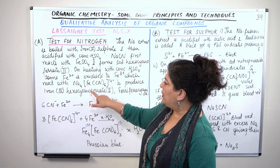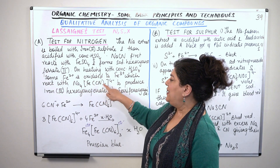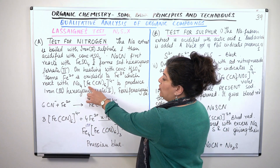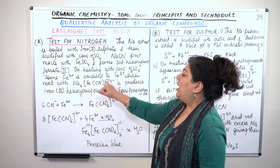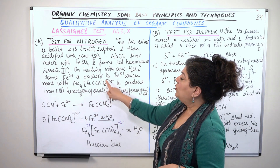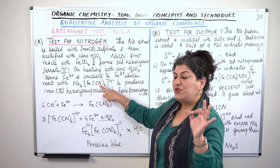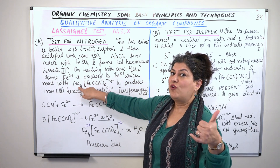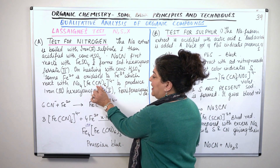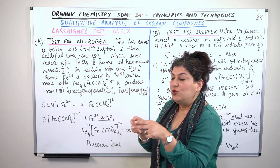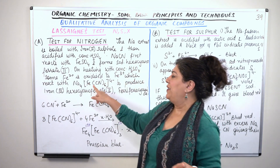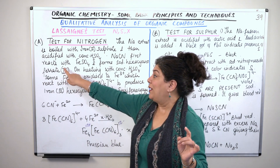The formula of sodium hexacyanoferrate(II) is Na₄[Fe(CN)₆]⁴⁻. Why is it hexacyano and how do we know the charge on iron is +2? The charge on the cyanide ion is −1 and on sodium is +1. There are 6 cyanide ions giving 6 negative charges, and 4 sodiums give 4 positive charges. The overall ion has a 4− charge, meaning 2 of the 6 negative charges have been neutralized by iron — therefore the charge on iron is +2, and that's why we write the 2.